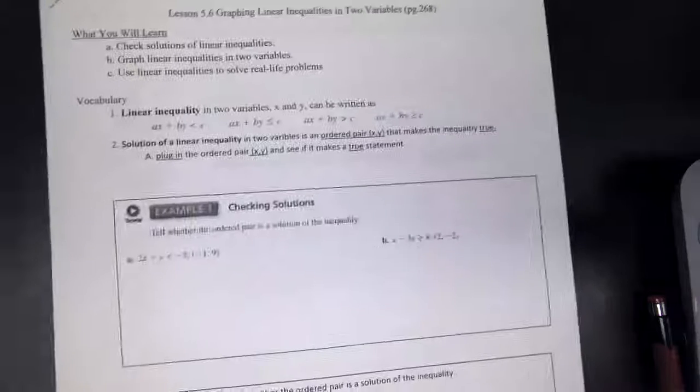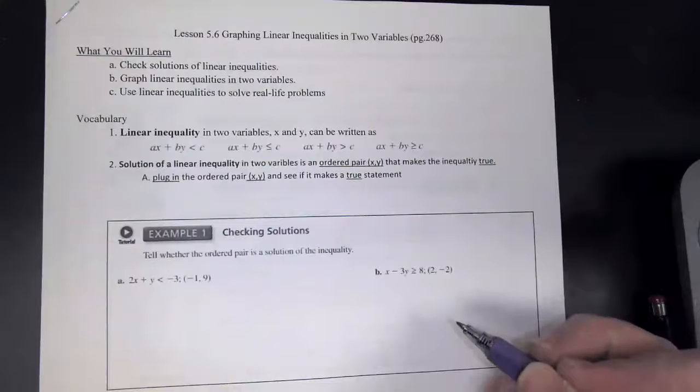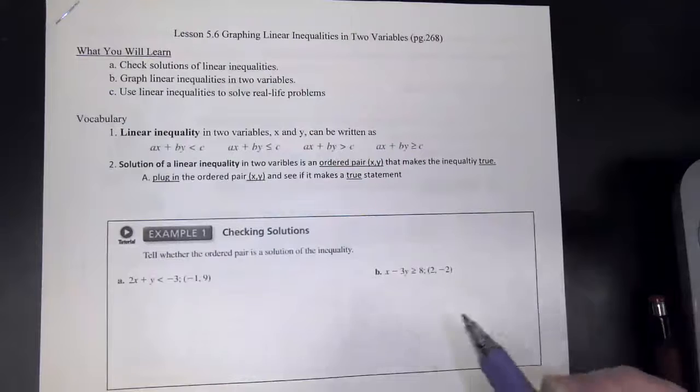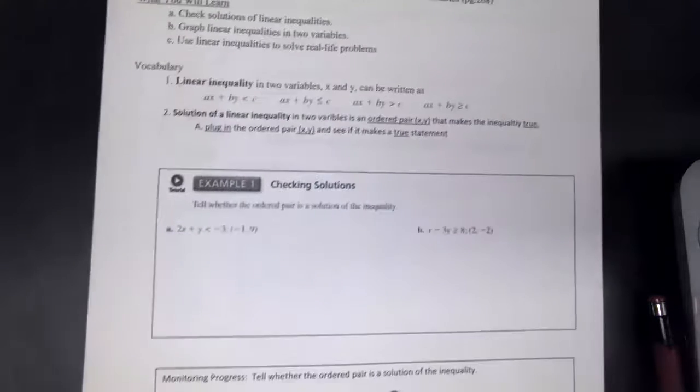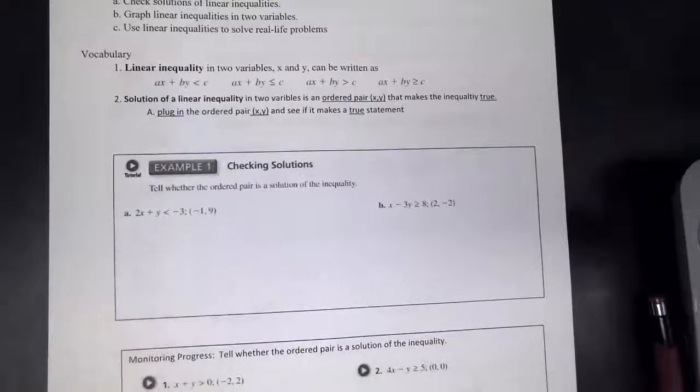All right friends, we're going to do 5.6. And so this is graphing linear inequality. So I'm glad that we practiced on graphing, doing slope intercepts. So we are going to practice graphing, but when you do inequality, you're going to need some colored pencils in order to be able to do this because we get to shade actually.